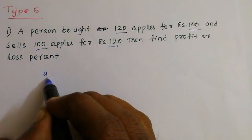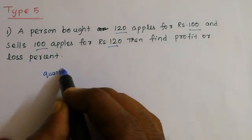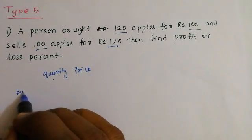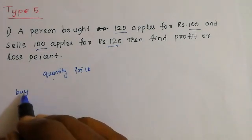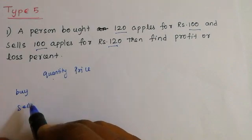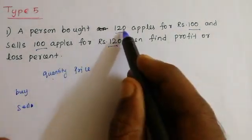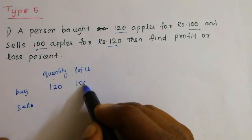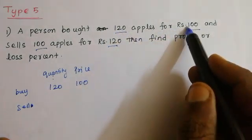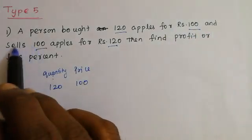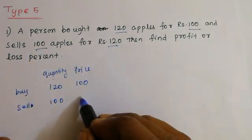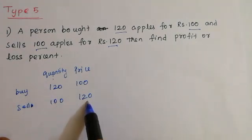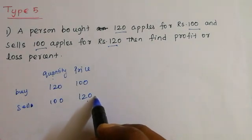First of all, quantity and price. Now, price. Quantity, price. The first is the price, and the next is the price. About the quantity — where is the price? 100. Where is the price? 100. How much price? 100. Cross multiply.